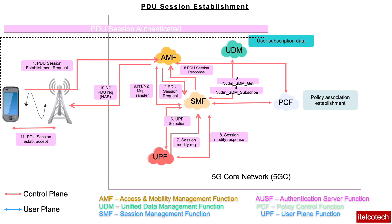The gNodeB and the UE then communicate with each other. The radio access network may issue access-network-specific signaling exchange with the UE. In the case of NG-RAN, an RRC connection reconfiguration may take place, during which the UE establishes the necessary NG-RAN resources related to the QoS rules for the requested PDU session.